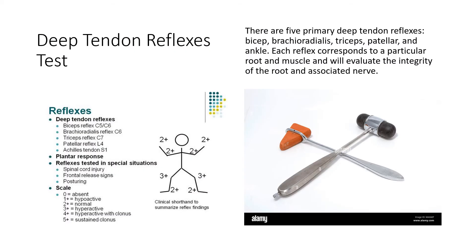There are five primary deep tendon reflexes: the biceps, the brachioradialis, the triceps, the patella, and the ankle. Each reflex corresponds to a particular nerve root and muscle and evaluates the integrity of the root and associated nerve. For the lower extremity evaluation, we are primarily concerned with the deep tendon reflexes of the patella and the ankle, which we will practice in our practical training lab.